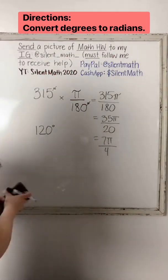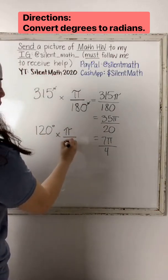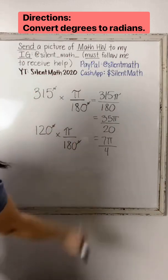Let's do for the 120. So again, I have degrees on top, so I want to make sure that I have my 180 on the bottom so that both of my degree signs can cancel each other out.